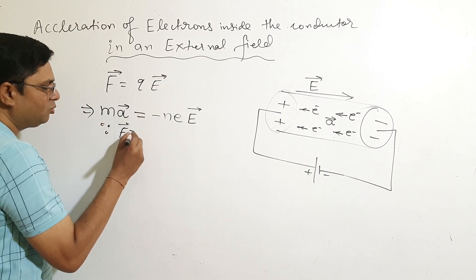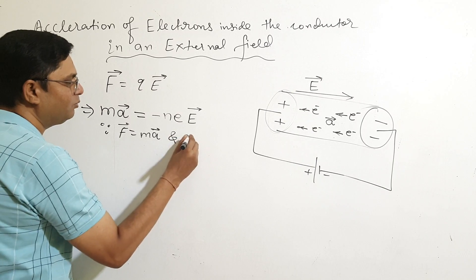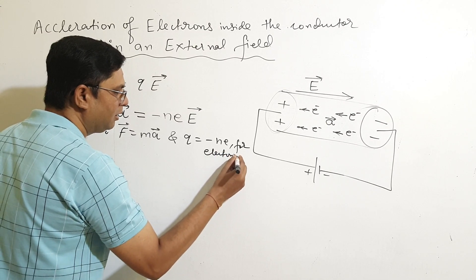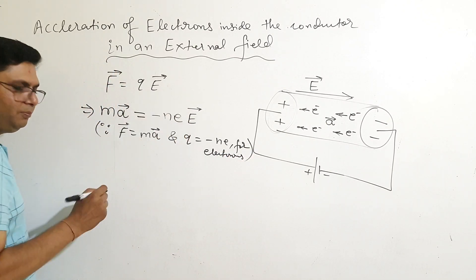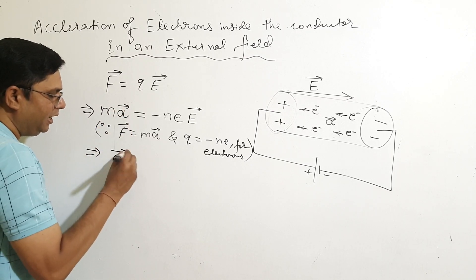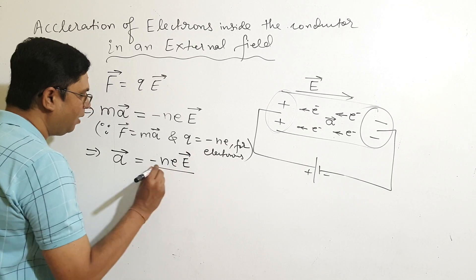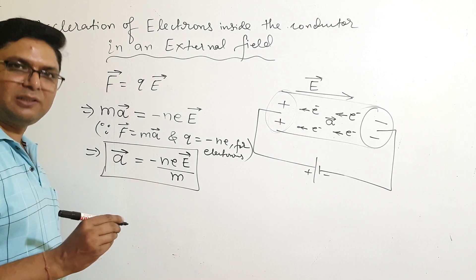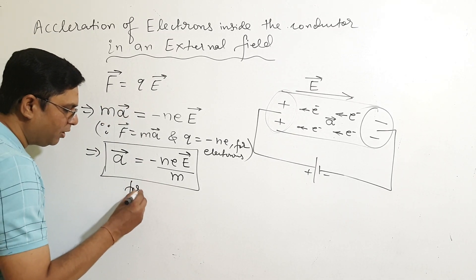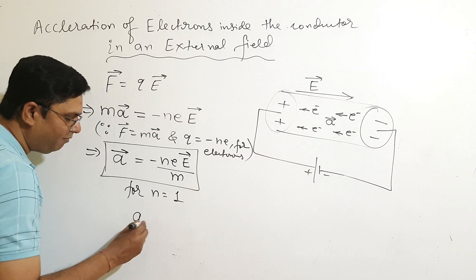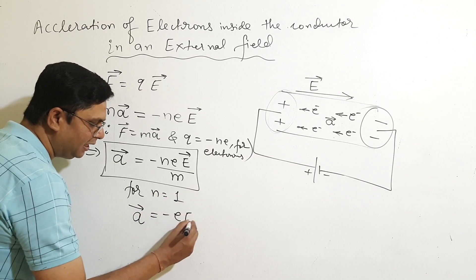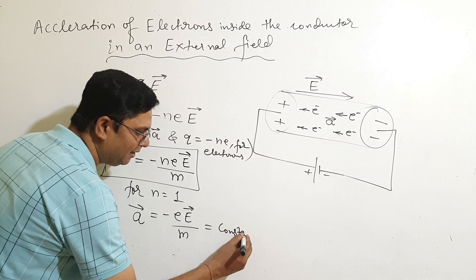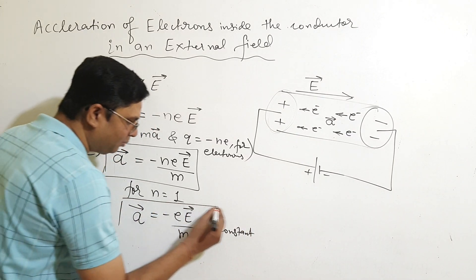From these equations, the acceleration 'a' equals minus eE divided by M. For N equals 1 electron, the equation is a equals minus E (electric field) divided by M. This is a constant quantity, because the mass of the electron is constant and the charge of the electron is also constant.